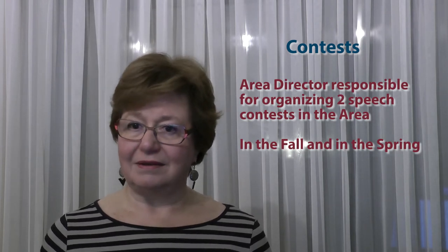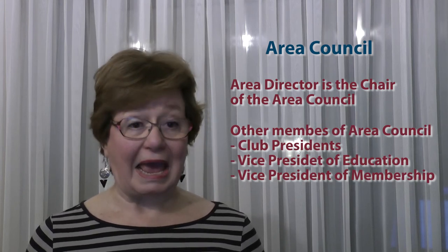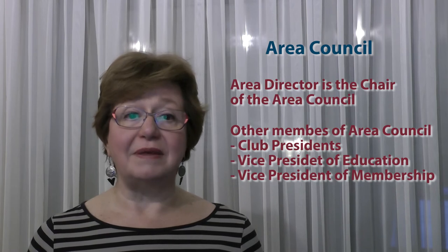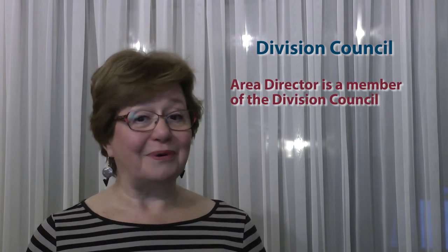In the fall and in the spring, the area director is a member of three different teams. Number one: the area council. The area director is the chair of the area council. The other members of the area council are the club president, the vice president education, and the vice president membership of each club in the area. The area council discusses, designs, and implements the program for the Toastmasters year, which is called the area success plan.